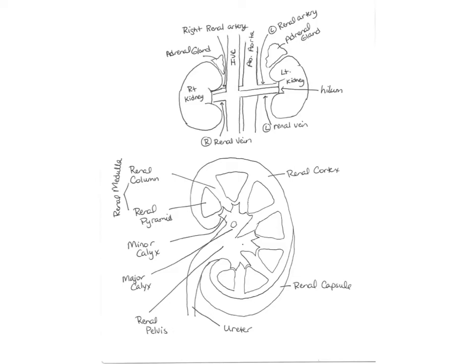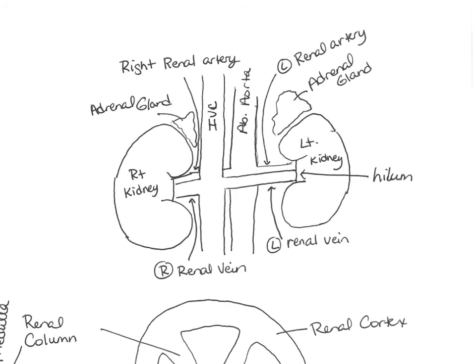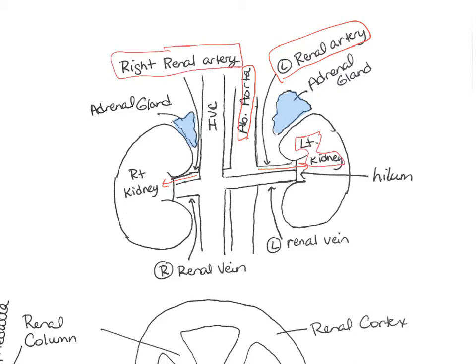Now let's look at the structure and anatomy of kidneys. Kidneys are paired organs, meaning there are two of them, located on either side of the vertebral column. They have adrenal glands sitting right over the top of them — one adrenal gland on top of each kidney. The blood supply coming into the kidneys comes from the abdominal aorta, which has two branches called the renal arteries. The left renal artery goes into the left kidney and the right renal artery goes into the right kidney.